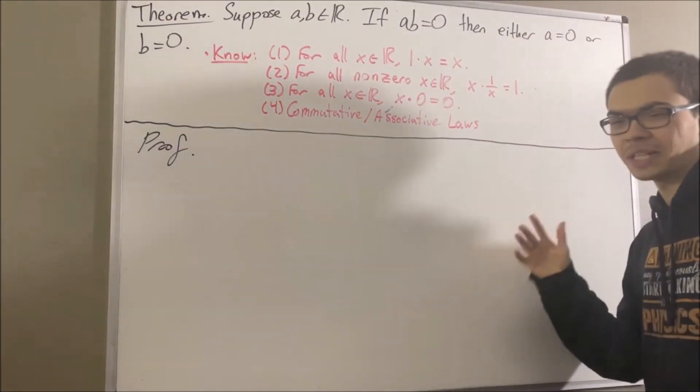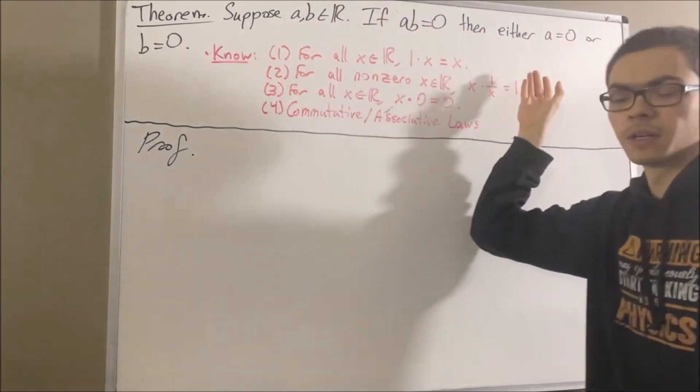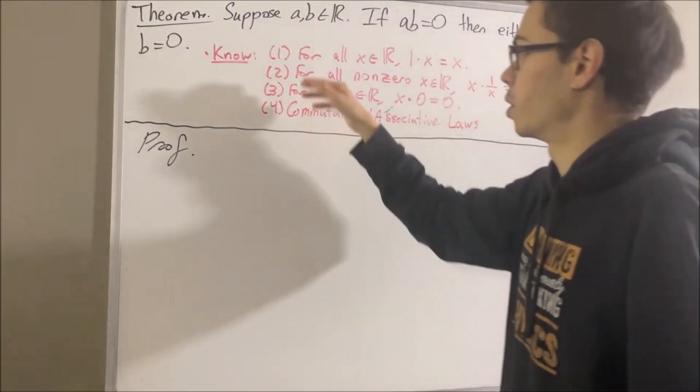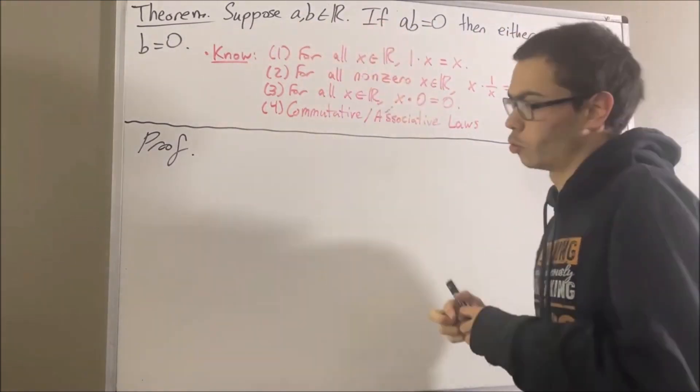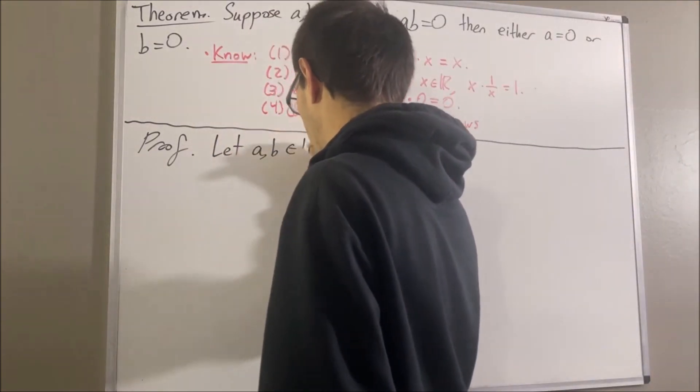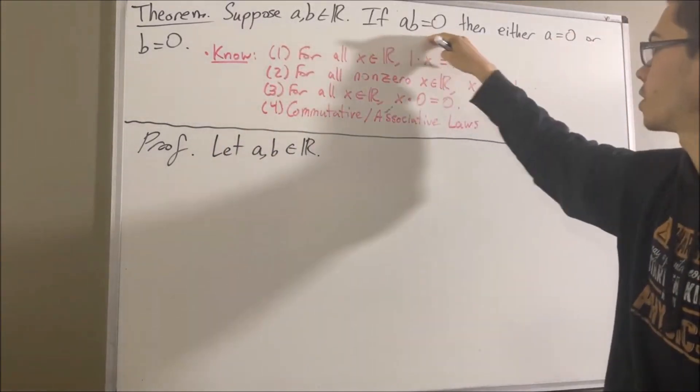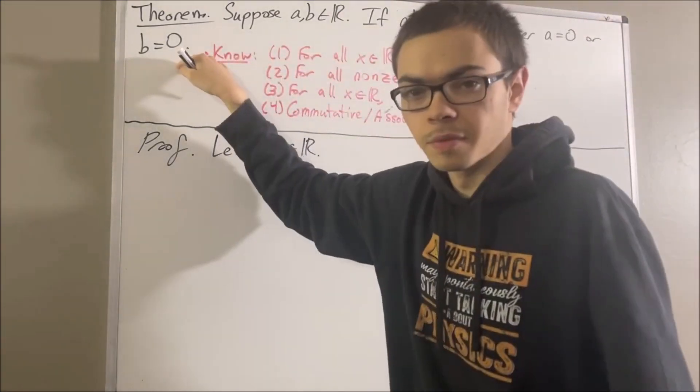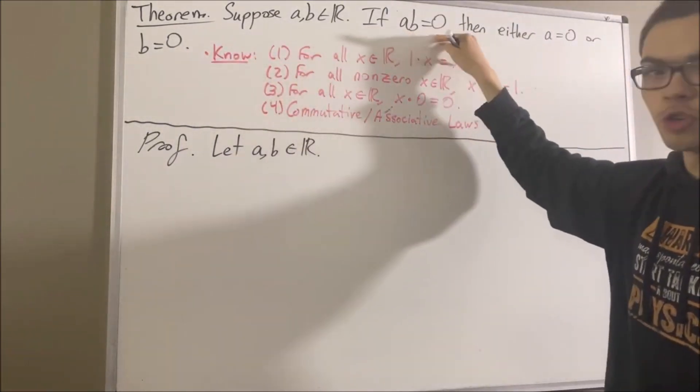Okay, so now let's actually get into proving the theorem. To start out the proof, let's suppose A and B are any two real numbers. Our whole goal now is to prove if this is true, then this is true. So let's assume that this is true.